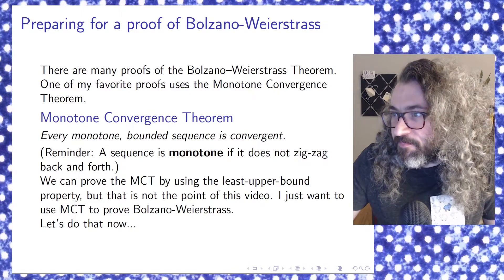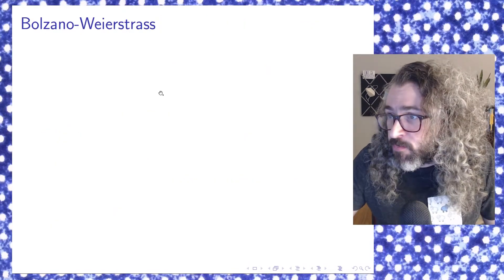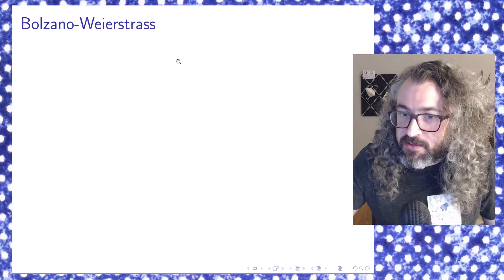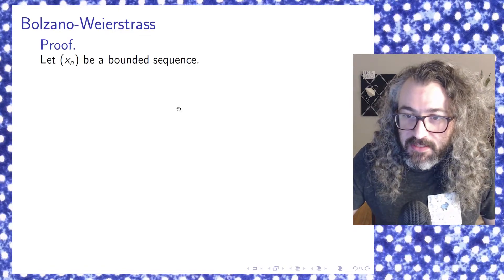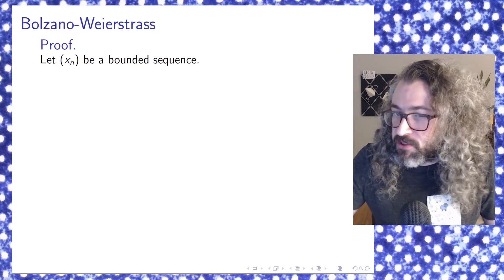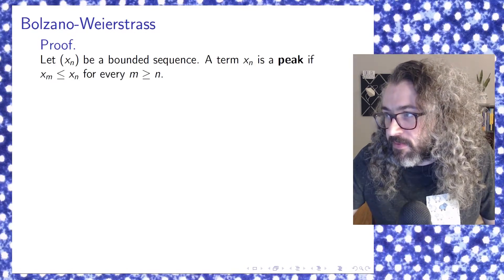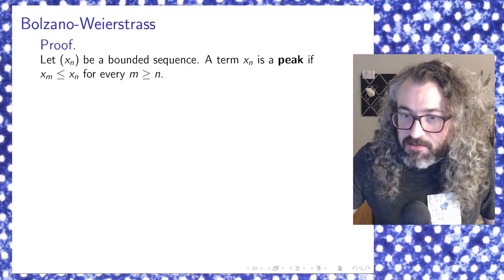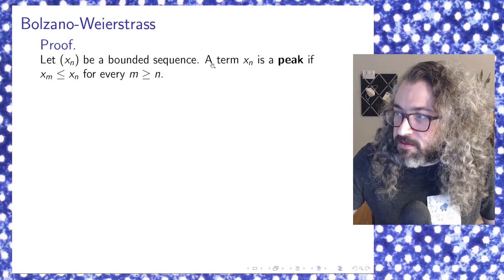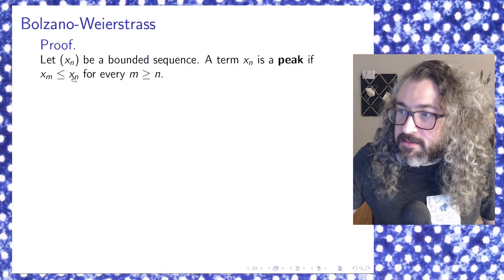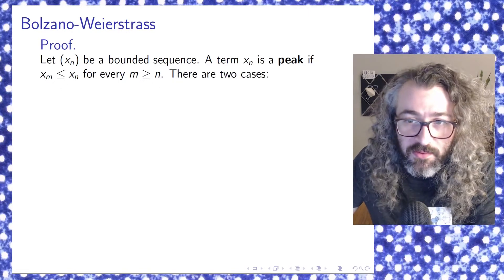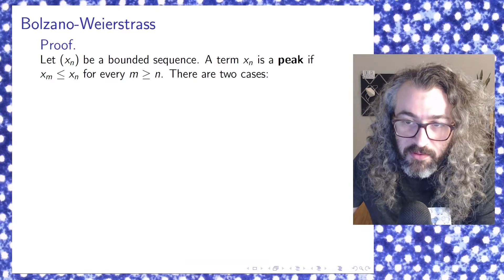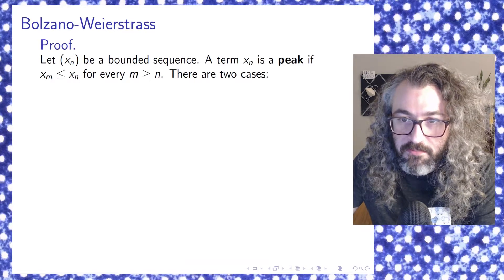Here is one proof of the Bolzano-Weierstrass theorem. Let x sub n be a bounded sequence. The goal is to show that it contains a convergent subsequence. To do this, you have to introduce a new concept: a term in the sequence is called a peak if it's bigger than or equal to every term that comes after it. There are two cases, and we're going to show that in both cases we can find a monotone sequence.